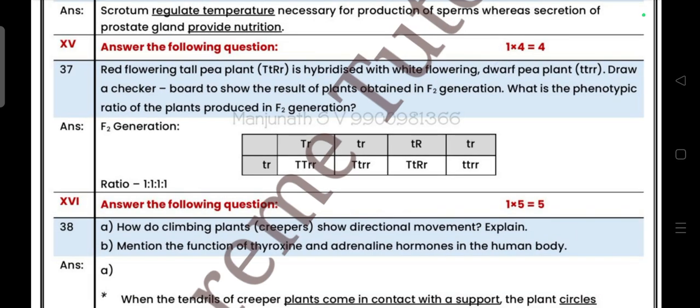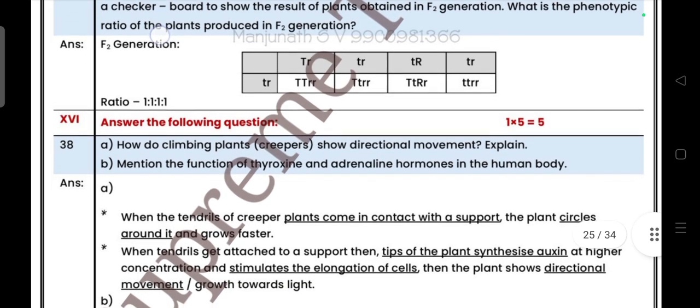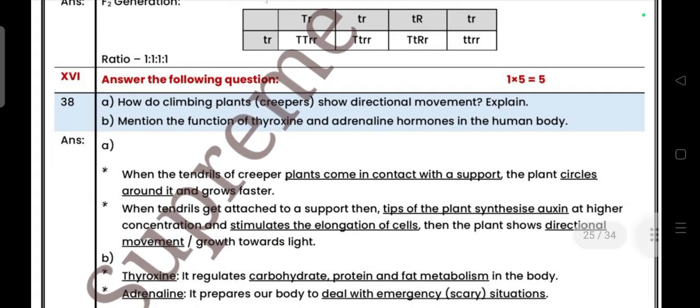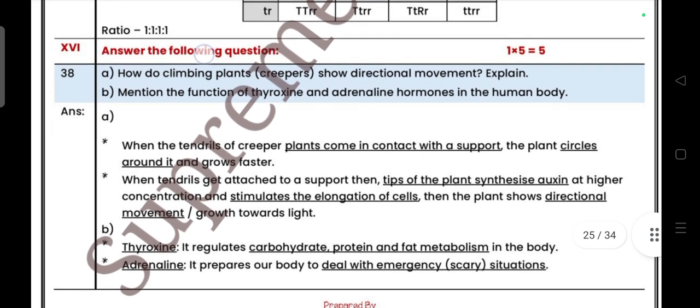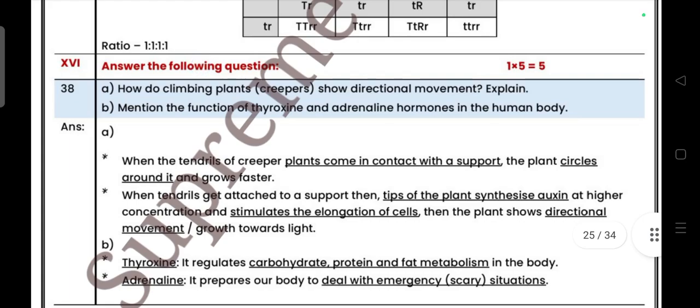Next, four mark question, checkerboard, you have to draw. Next come to five mark question. How do climbing plants and creepers show directional movement? Explain. Mention the function of thyroxine and insulin gland hormone glands in human body.